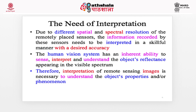The need of interpretation: due to different spatial and spectral resolutions of the remotely sensed sensors, the information recorded by these sensors needs to be interpreted in a skillful manner with a desired accuracy. The limit of the human vision system is its inherent ability to sense, interpret and understand the object's reflectance appearing in the visible spectrum. This is one of the major limitations — our eyes are restricted to observing information in the visible spectrum only. Therefore, the interpretation of remotely sensed images is necessary to understand the object's properties and phenomena obtained in different spatial and spectral resolutions.